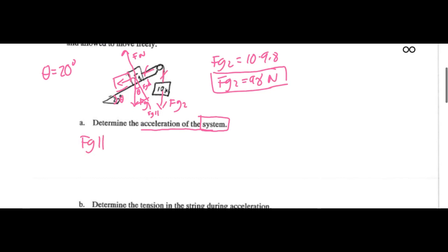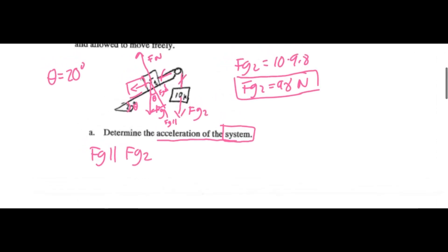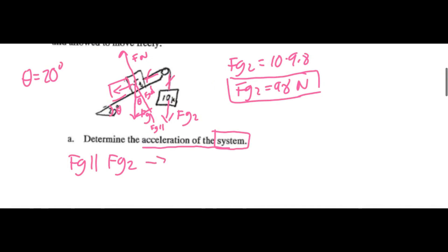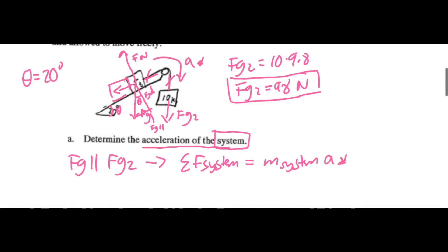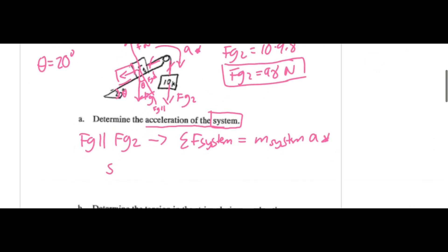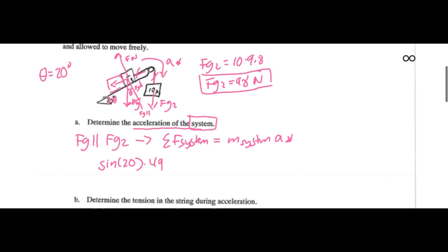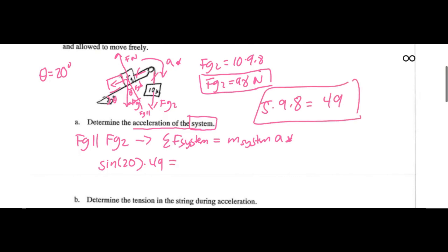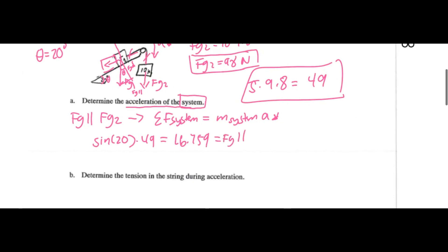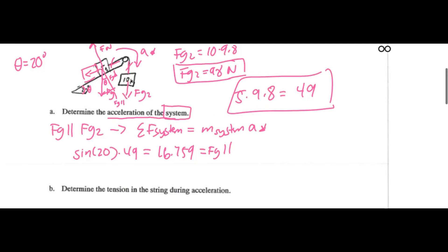To determine the acceleration of the system we have to determine FG parallel. The force of the system will be equivalent to the mass of the entire system times acceleration — I'll call this the star direction. We've got to use trig here, and the trig is going to be sine of 20 degrees. We multiply this by 49, because FG for the 5 kg mass is 5 times 9.8 equals 49 newtons. So 49 times sine 20 gives us a value of 16.759 newtons for FG parallel.